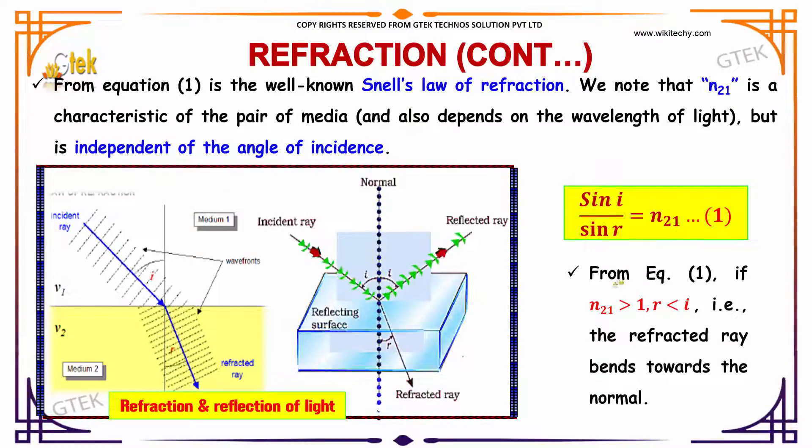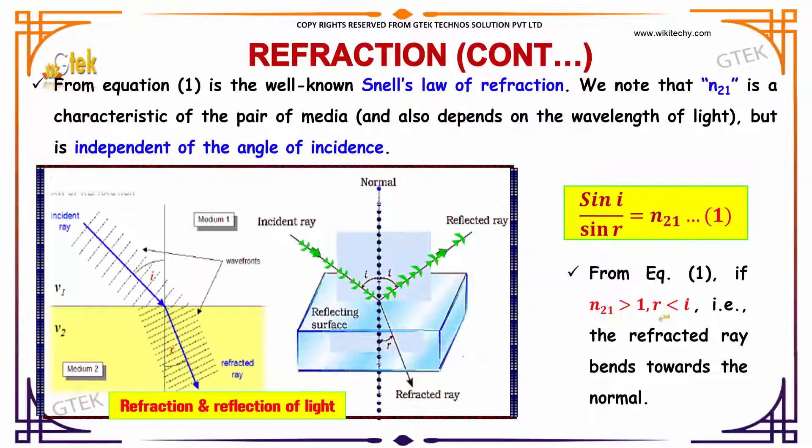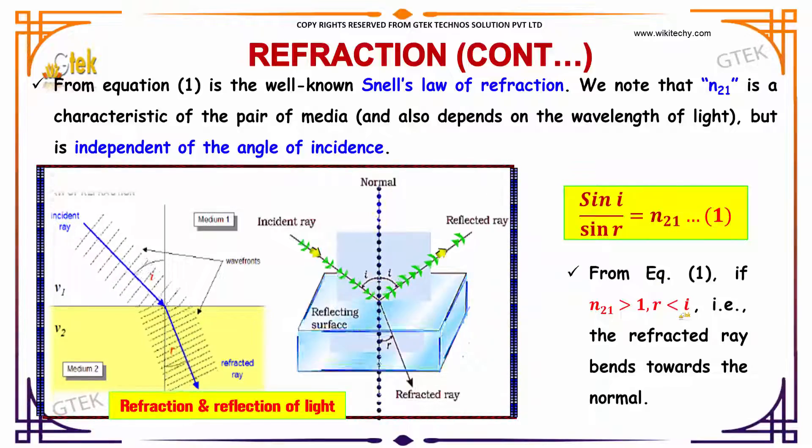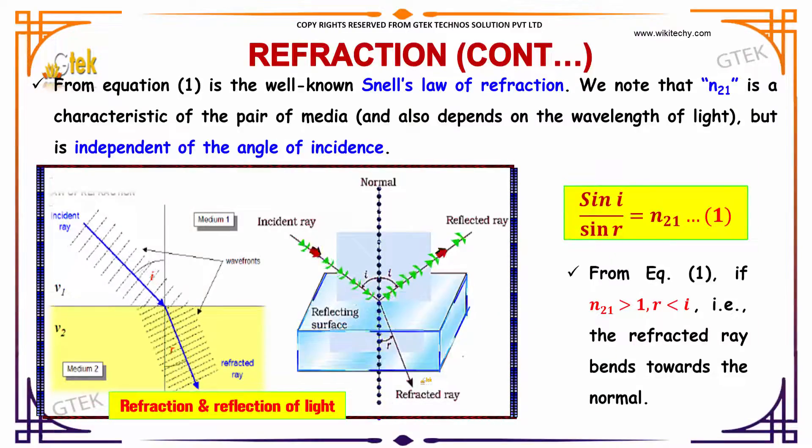If n21 is greater than 1, which indicates r is less than i, the refracted ray bends towards the normal. This is normal. It will bend towards the normal.